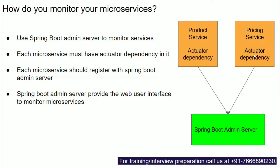You have to add the actuator dependency in the pom.xml of both the product service and the pricing microservice, and then enable Spring Boot Admin Server. It provides a web application UI where you can check the health of your product service and pricing service. Whenever asked how to monitor microservices, you can answer: Spring Boot Admin Server.